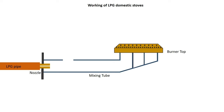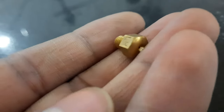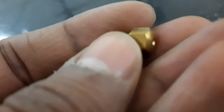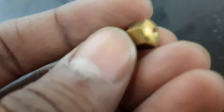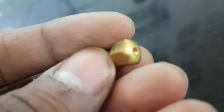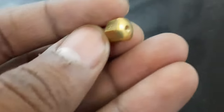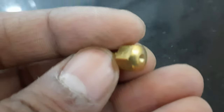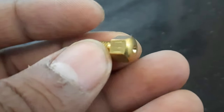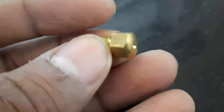Let's start with this animation. Basically, the burner assembly consists of 3 basic parts. The first is the nozzle, which is placed at the end of the pipe. It is designed to control the flow rate of the gas, or we can say the power output of the gas stove.